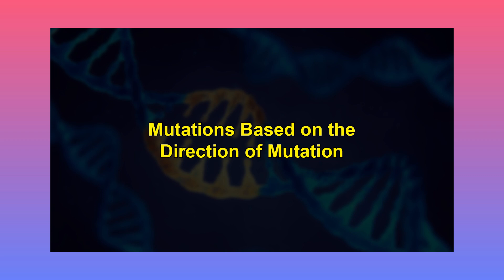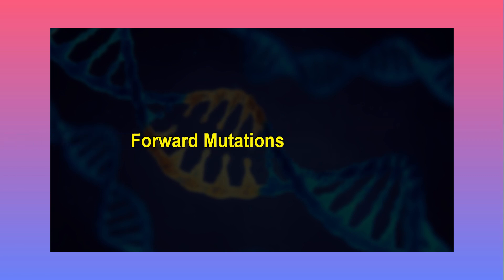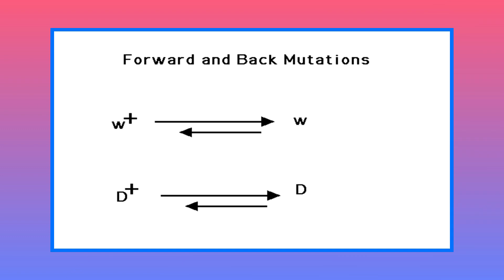Let's now discuss mutations based on the direction of mutation. In an organism, when a mutation creates a change from wild type to abnormal type, that type of mutation is known as a forward mutation. The forward mutation leads to the evolution of new traits in a population. Most mutations are forward mutations in nature.